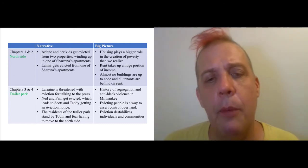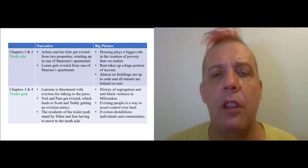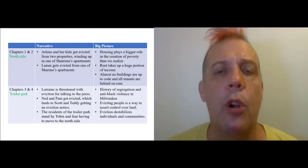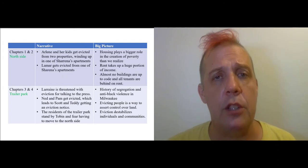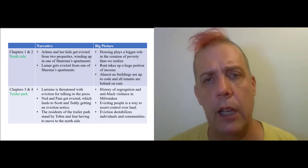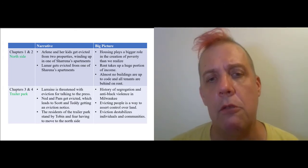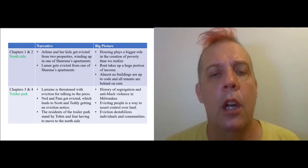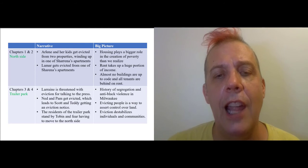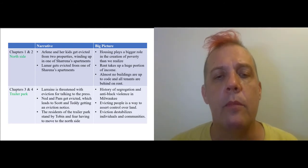Also, in these chapters, we get some of the history of segregation and anti-black violence in Milwaukee, which is important and applies generally to all sorts of older Great Lakes cities, including Cleveland, Lorraine, Elyria. And we talked about how evicting people is a way to assert control over land, and again, how eviction destabilizes individuals and communities.